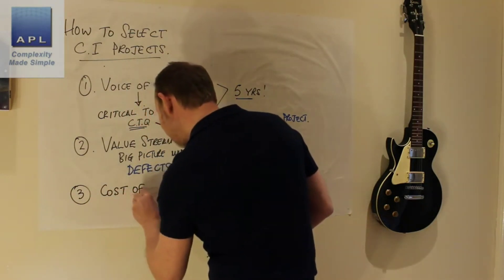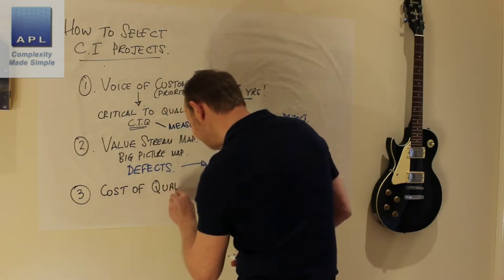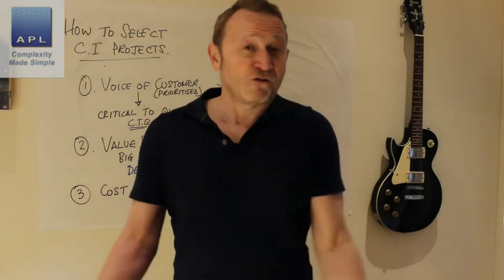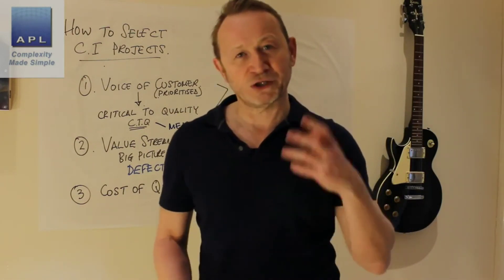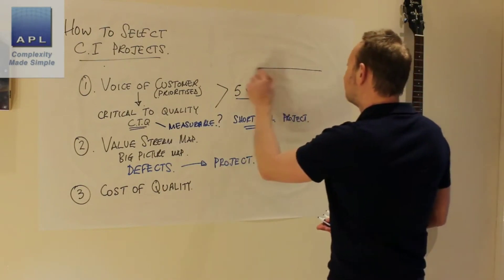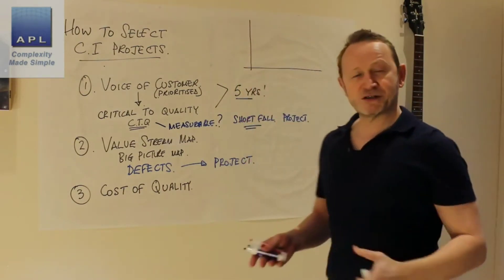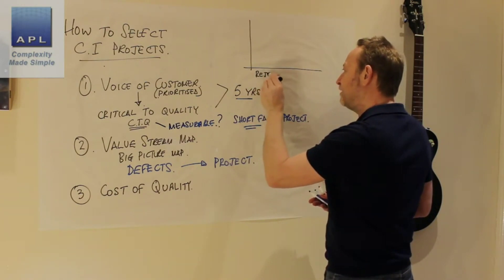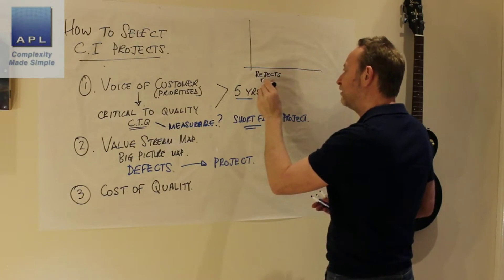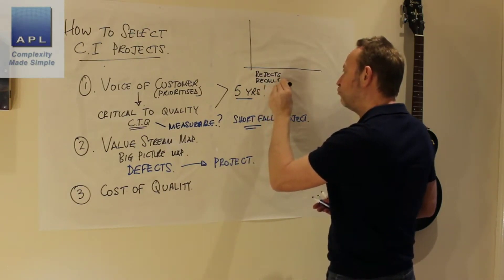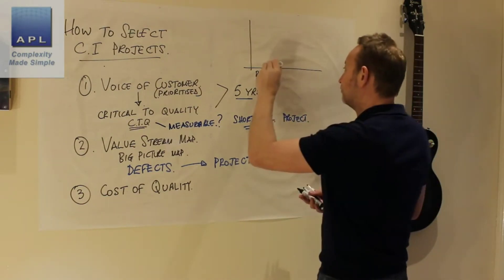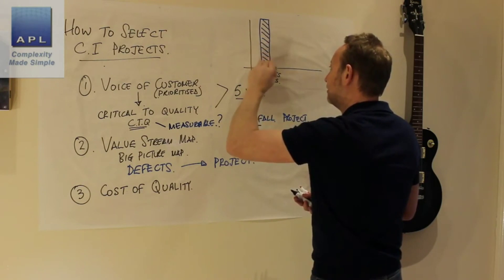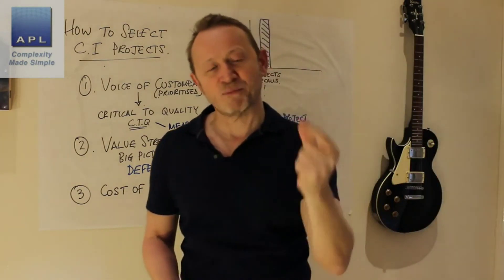Finally, you could just look at the cost of quality. I prefer that phrase over 'cost of poor quality.' The way to do this is to look at the cost of quality and then go fix the biggest cost of quality. Your cost of quality is typically going to be split into three: you're going to get the costs of rework, recalls, and repairs.